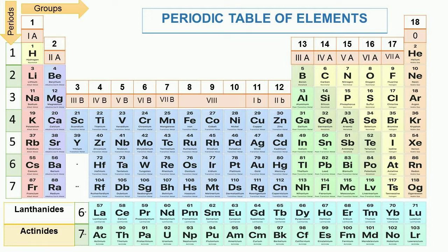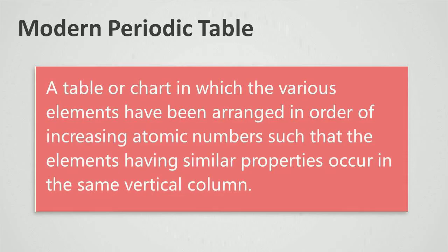That's why it is said that the physical and chemical properties of elements are the periodic function of their atomic numbers. The modern periodic table is defined as a table or chart in which various elements have been arranged in order of increasing atomic numbers such that elements having similar properties occur in the same vertical column.